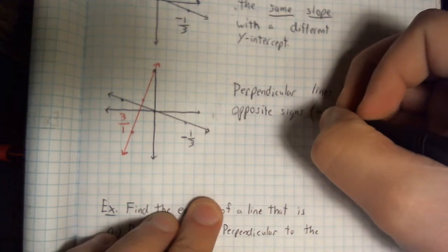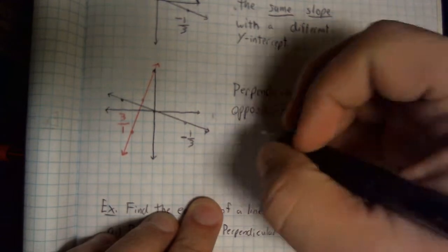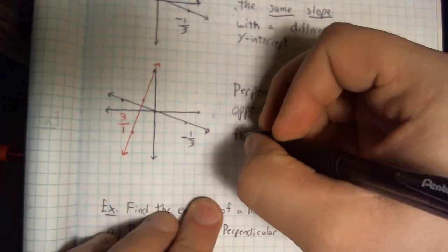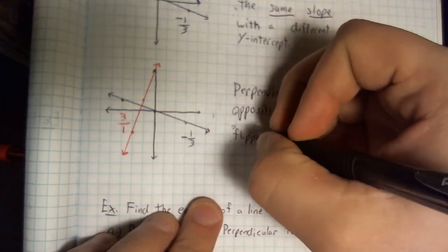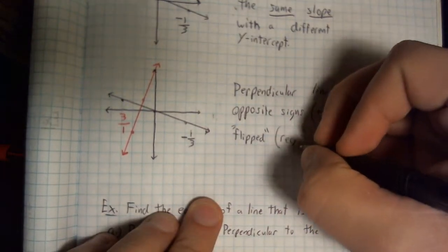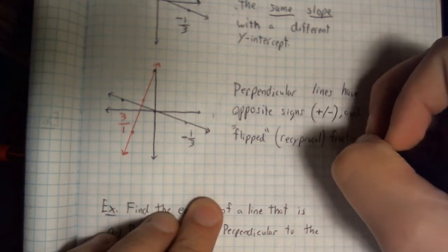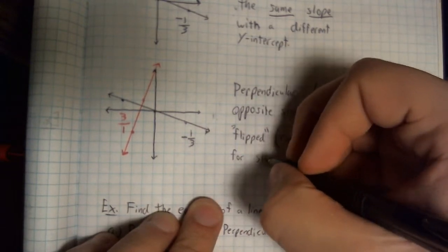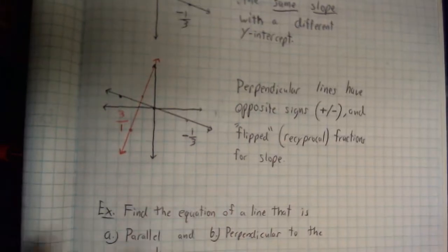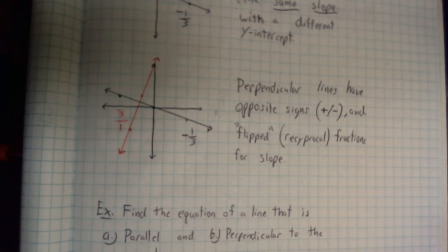I have to have a negative and a positive, and I want my fractions to be flipped or reciprocated. Perpendicular lines have opposite signs — we want one positive and one negative — and what a lot of you think of as flipped, technically it's called reciprocal fractions for slope. Perpendicular lines have opposite signs and flipped or reciprocal fractions for their slopes.